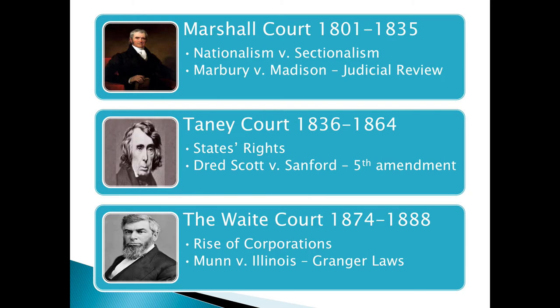Ten years later, the Munn decision was overturned in the Wabash case. What's interesting is the use of due process. The Fifth Amendment mentions due process, and the Fourteenth Amendment also talks about due process. Under the Munn decision, they used procedural due process — did the Grangers follow the procedures of the law fairly? Waite said yes. Ten years later, a new concept called substantive due process arrived — lawyers argued the Granger laws were unfair and unconstitutional because of the substance of the law, and the courts overturned Munn. Out of the Wabash case, the federal government established the ICC — the Interstate Commerce Commission — to start regulating businesses.